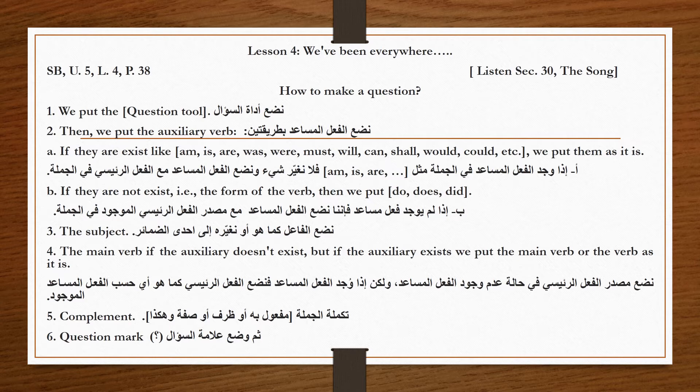We place the auxiliary verb with the main verb in the sentence. B: if no auxiliary verb exists — that is to say, in sentences where the form of the verb has no auxiliary — then we put do, does, or did. إذا لم يوجد فعل مساعد فإننا نضع do, does, أو did مع مصدر الفعل الرئيسي.